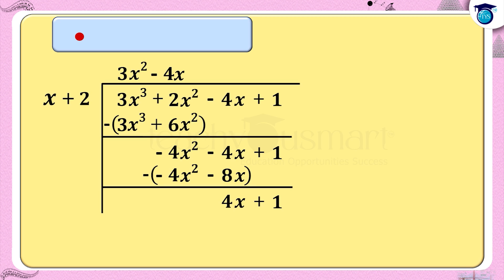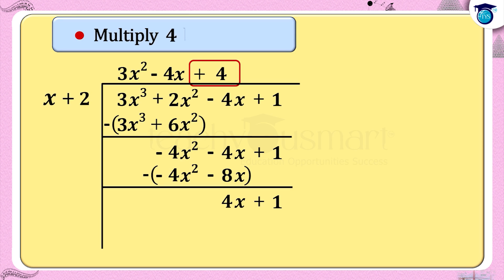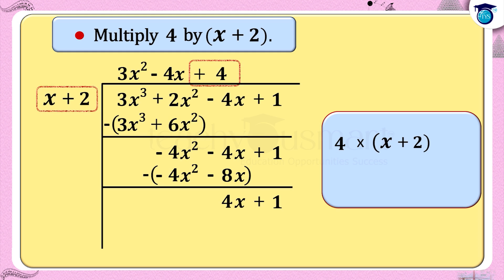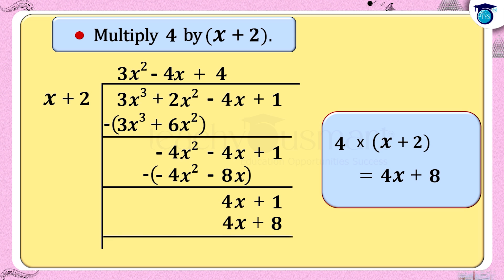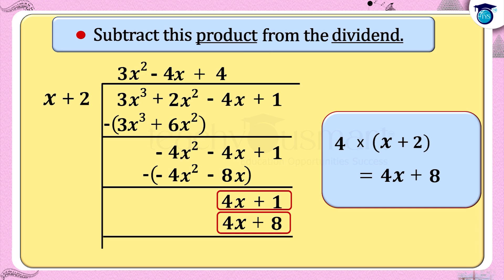Step 8: 4x + 1 is the next dividend. Divide 4x by x, that is 4x ÷ x = 4, which is the next term of the quotient. Step 9: Multiply 4 by x + 2, that is 4 × (x + 2) = 4x + 8. Step 10: Subtract this product 4x + 8 from the dividend 4x + 1. We get the remainder as -7.